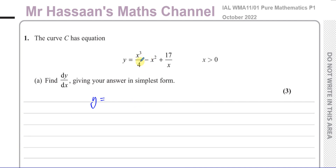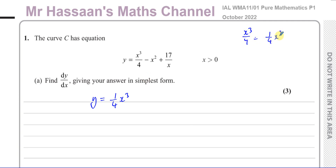First of all, what we have to do is make sure it's ready to be differentiated. What I like to do with x cubed over 4 is write that as a quarter x cubed. You don't have to, but that's how I prefer to write it — a coefficient times x cubed. x cubed over 4 is the same as 1 over 4 times x cubed; they're the same thing.